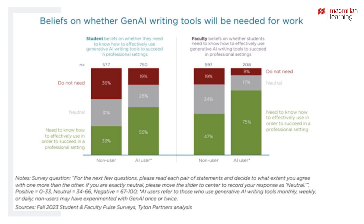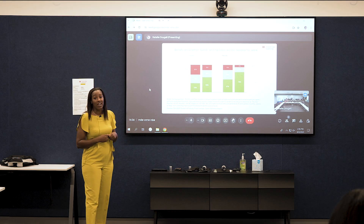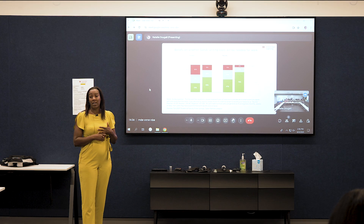The next finding looked at whether faculty and students believe generative writing tools will be needed in the workplace. By and large, there is agreement that they will be needed. A study by Amazon looked at over a thousand firms in January and found that 73% were looking to hire people with these skills, and 75% said it has been difficult or nearly impossible to find people who already come with generative AI skills. On average, firms were willing to pay 35–47% higher wages for people with these skills.